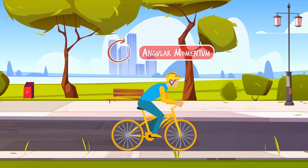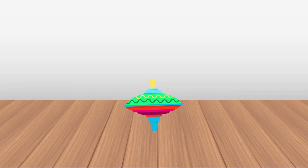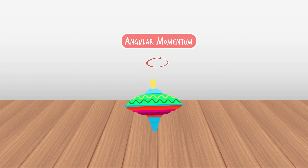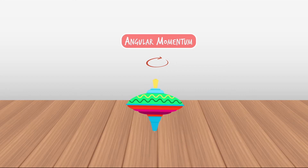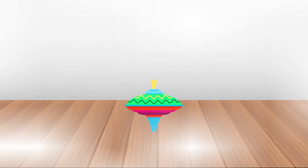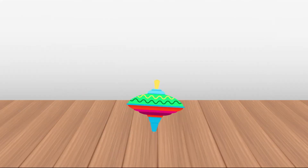As Newton said, a body in motion likes to stay in motion, and this is true for circular motion as well. Once you get something spinning, like a top, the angular momentum makes it so that the top wants to continue spinning. This is why a spinning top stays upright, while a top that is not spinning falls down.